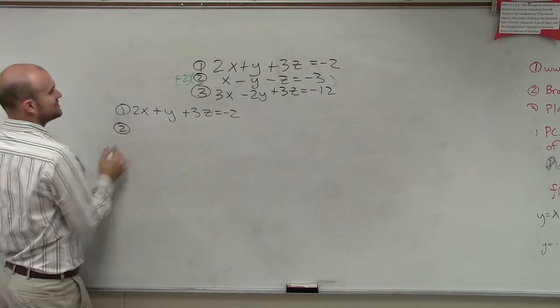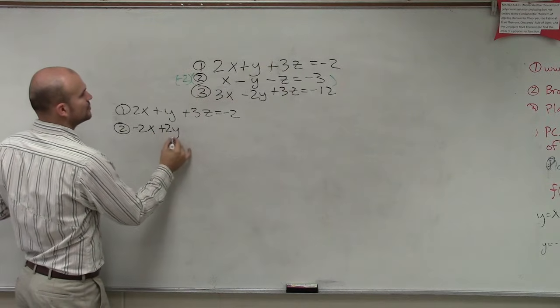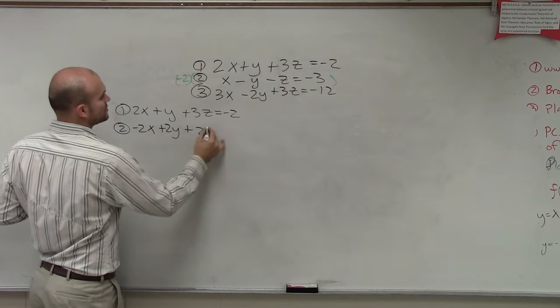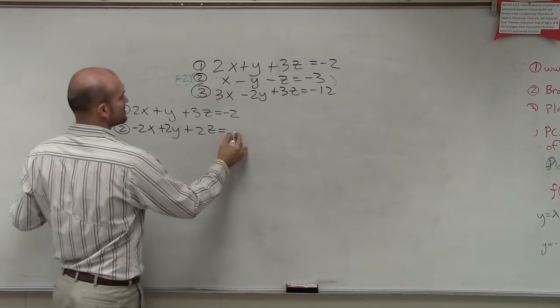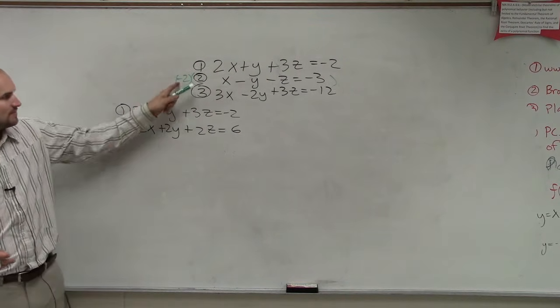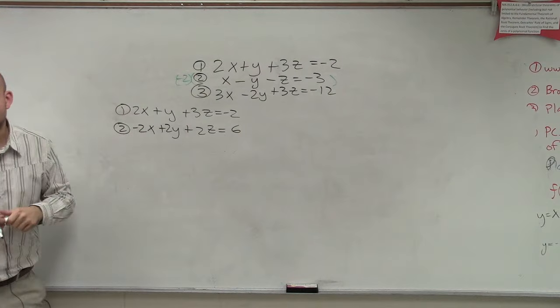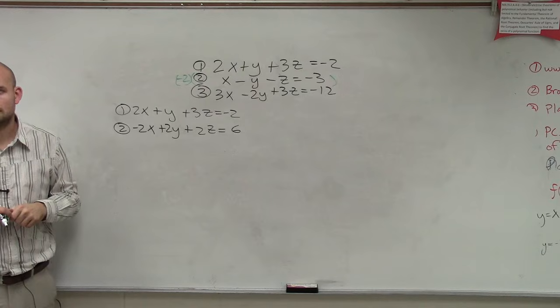So when I do that, equation 2 now becomes negative 2x plus 2y plus 2z equals positive 6. Has everybody followed me with that? I multiply negative 2 times my second equation. Yeah. Yes?